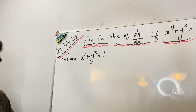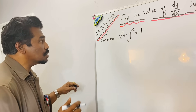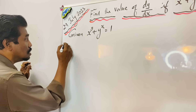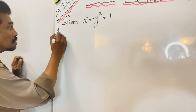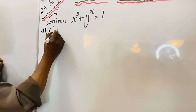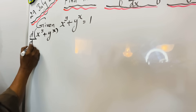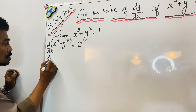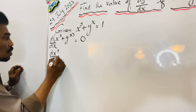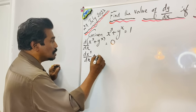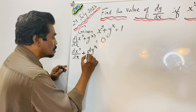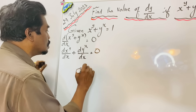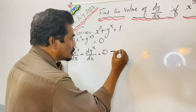The first step is to differentiate both sides. When you differentiate both sides, the right-hand side is a constant 1, so it will become 0. So d(x^y)/dx plus d(y^x)/dx will be equal to 0. This is equation number 1.